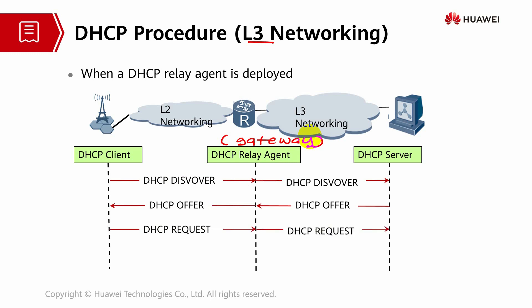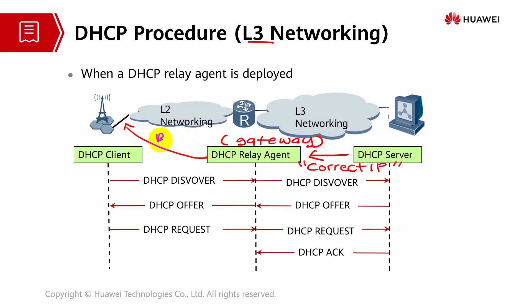The communication will happen in exactly the same way as before but via the relay agent, and they will still request the IP address. The relay agent needs to have the correct IP of the server configured so that it can properly forward the packets sent by the base station. It will collect the base station information and forward it to the server - that is the key difference between L2 networking and L3 networking.